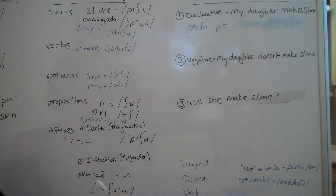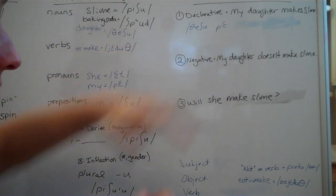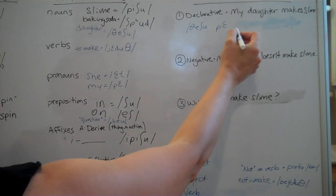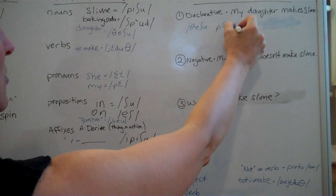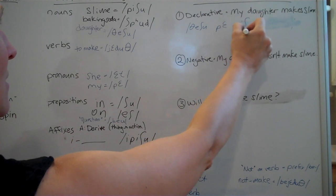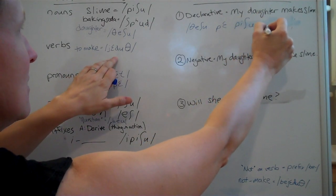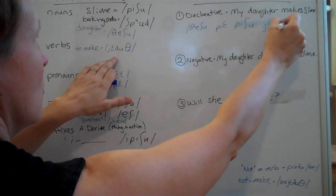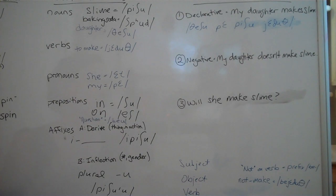I wanted to do subject, object, verb. So subject, Daughter Mai, slime, object, makes. So, we put slime in here, Peishu makes jeduth. So, my daughter makes slime. Feishu, Pe, Peishu jeduth. There we go.